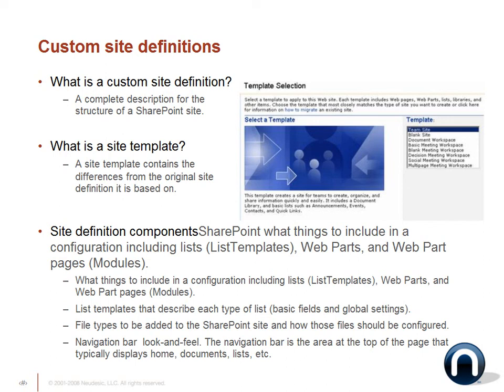Now let's talk about custom site definitions. A custom site definition is the complete description for the structure of the SharePoint site. The site template contains the differences from the original site definition it's based on. Site definition components include: configuration including list templates, web parts, web part modules, pages, and modules. The list templates describe each type of list with basic fields and global settings. Your file types should be added to the SharePoint site and configured appropriately. The navigation bar — the area on top of the page that typically displays home, documents, lists, et cetera — is also part of the look and feel.